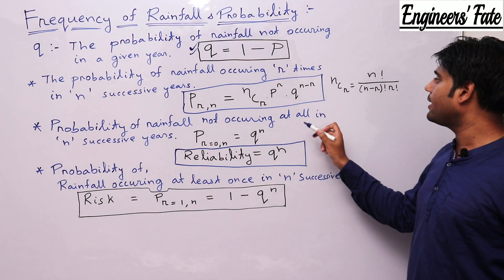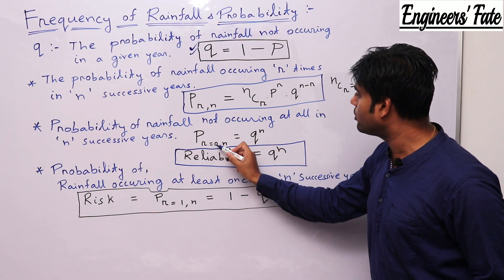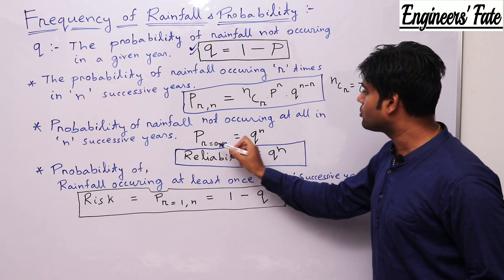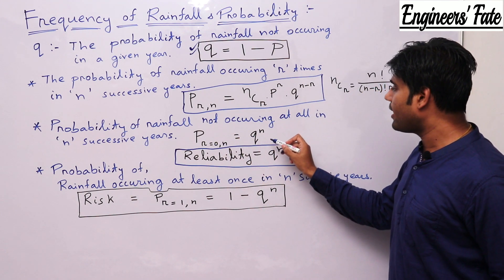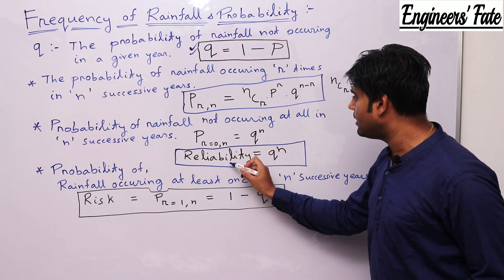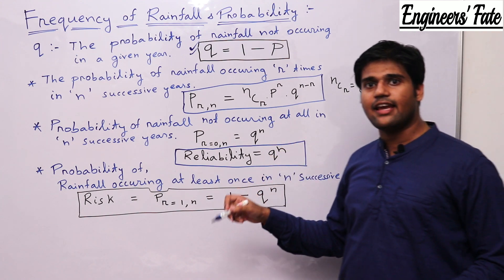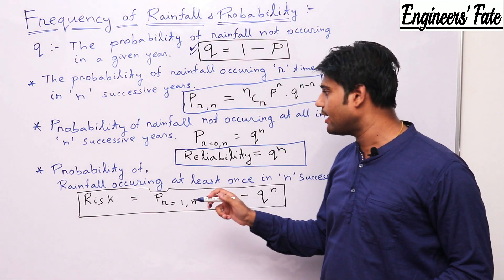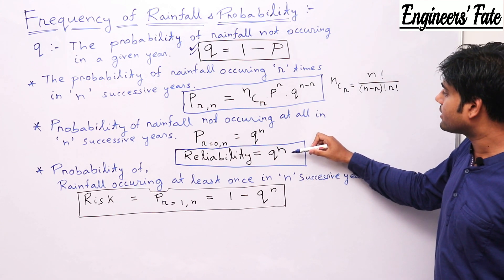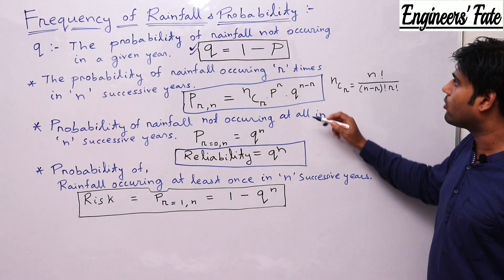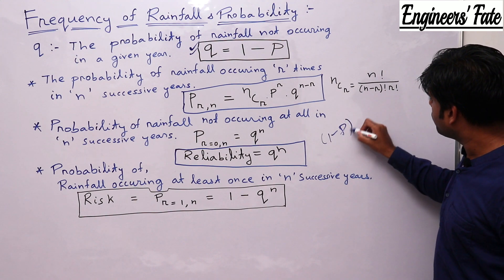The probability of rainfall not occurring at all in n successive years is given as P(r=0), because not occurring at all means r equals 0, and that equals Q to the power n. This Q to the power n is also known as reliability. So reliability equals Q to the power n. If in the exam you are asked to find reliability, just put reliability equals Q to the power n.